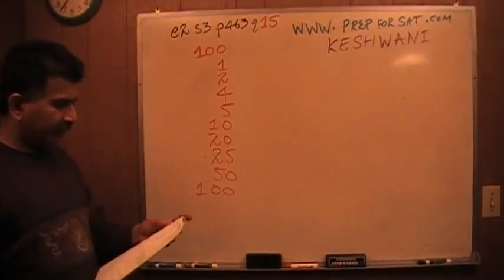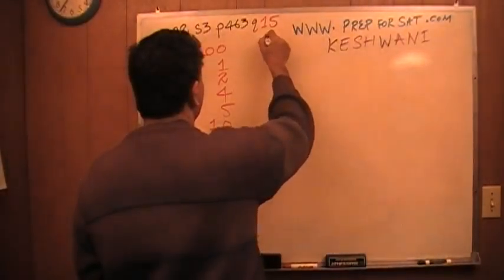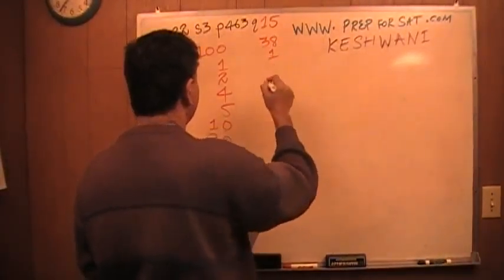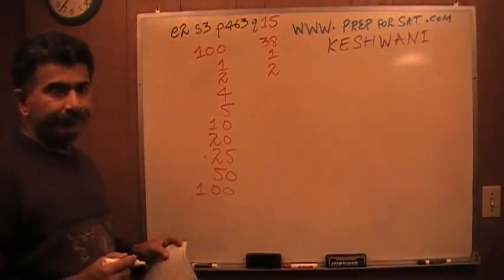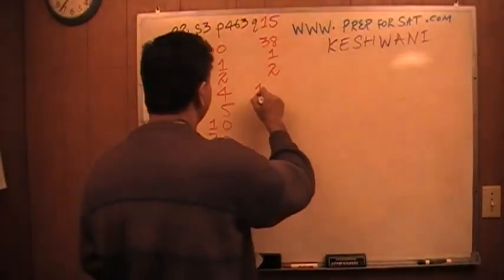Similarly, I am going to make a list of the factors of 38. 1 of course. 2 of course. Then what? 1, 2 and what? There you go. 19. That's it.